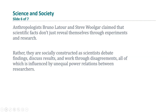Anthropologists Bruno Latour and Steve Woolgar claim that scientific facts don't just reveal themselves through experiments and research. Rather, they're socially constructed as scientists debate findings, discuss results, and work through disagreements, all of which is influenced by unequal power relations between researchers. In other words, the findings are influenced by the people who found them. Science is interpreted by scientists, and scientists are people who are influenced by the aspects of society and social life that we mentioned before.